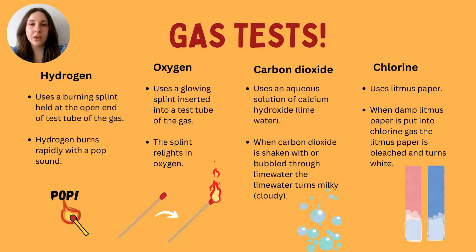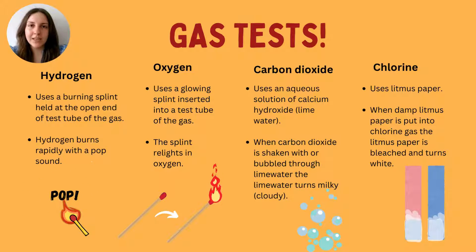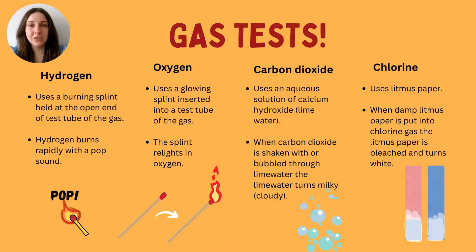For hydrogen, you use a burning splint over a test tube containing the gas. An experiment would release the gas and collect it into a test tube. You place the burning splint into the test tube and you should hear a nice squeaky pop sound.